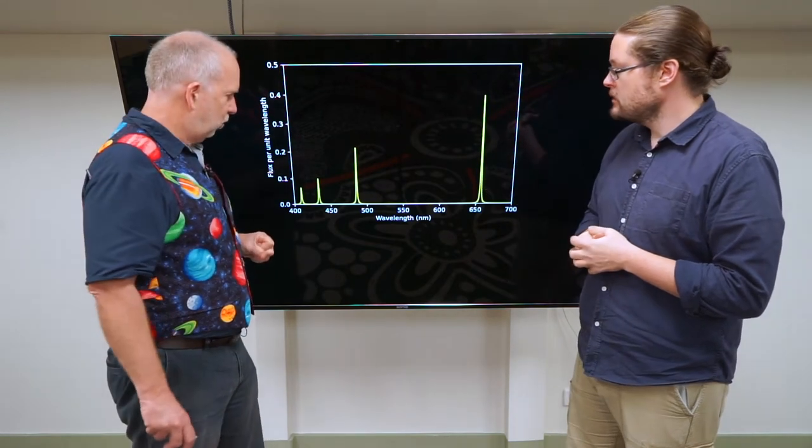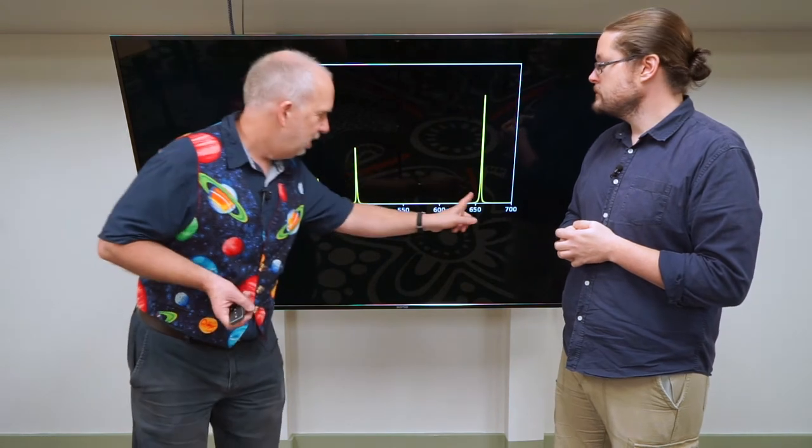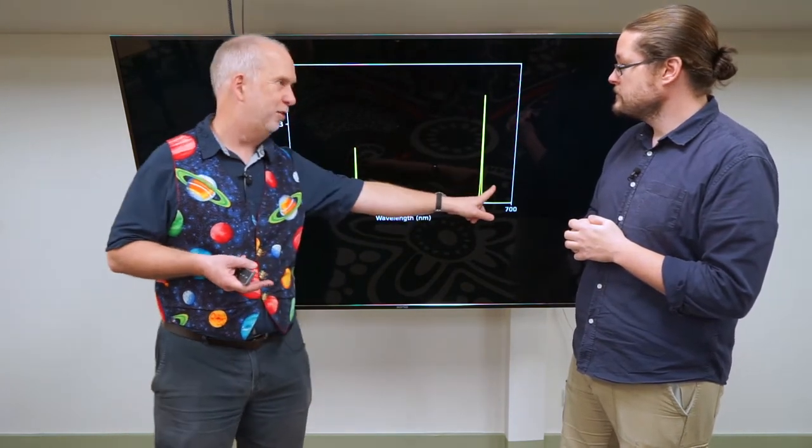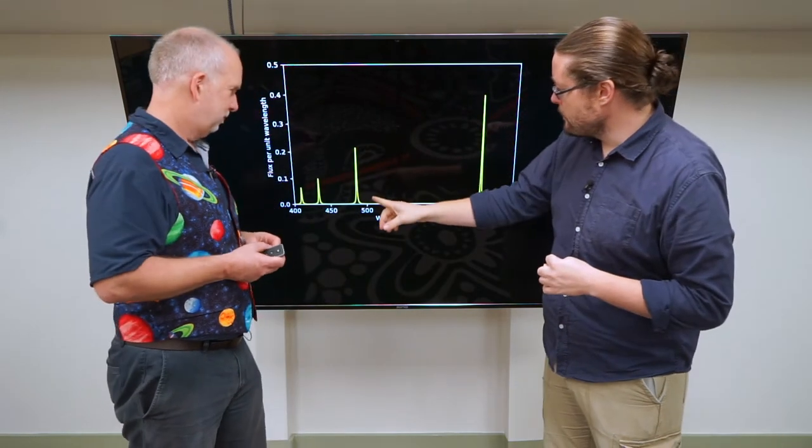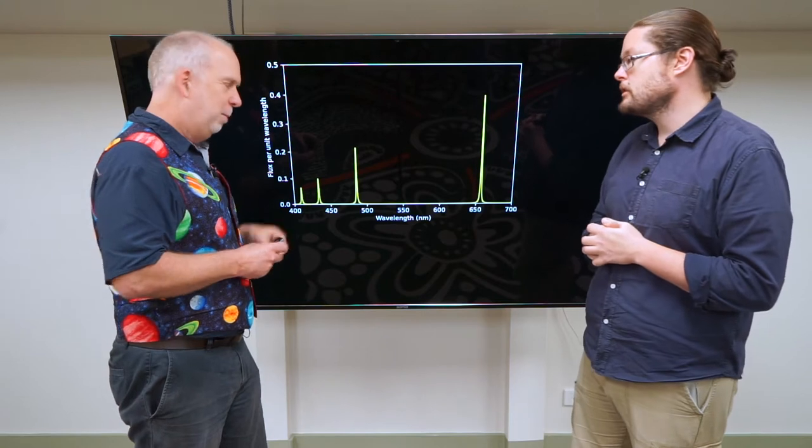For example, if you heat up hydrogen, you often see this in nebulae. They look very red because this particular spike is in the wavelength the human eye perceives as red, and this is by far the strongest spike. It's clearly stronger than the ones at bluer wavelengths.